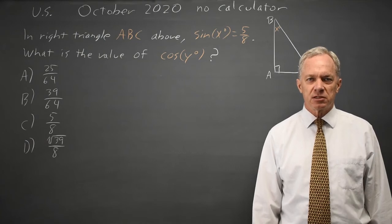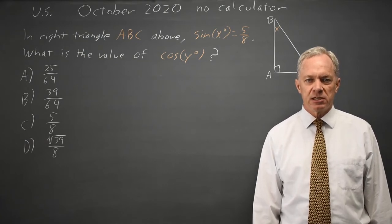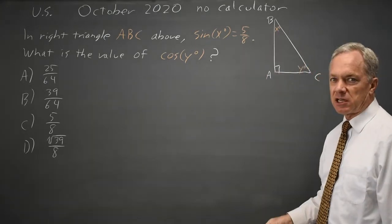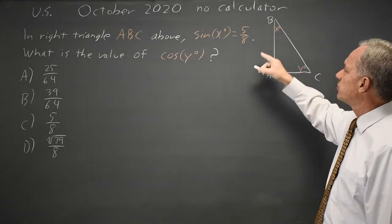This question is from the 2020 October U.S. SAT non-calculator. College Board gives us a triangle and tells us the sine of x degrees is 5 over 8.